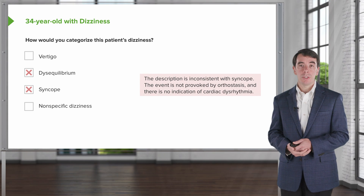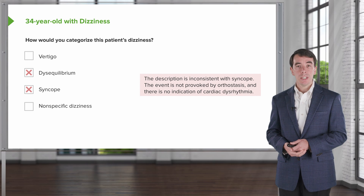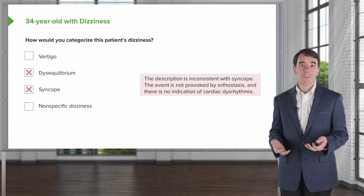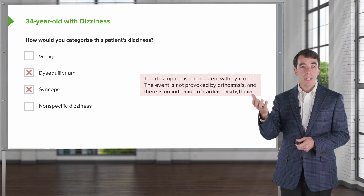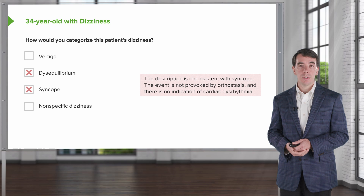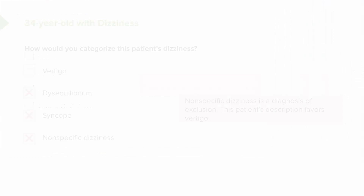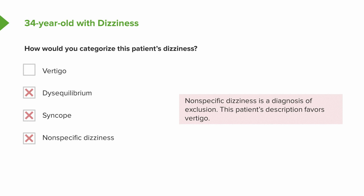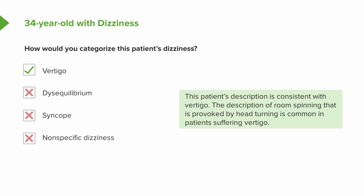The patient's description is also inconsistent with syncope. Syncope or presyncope is a feeling of fainting or near fainting, typically when patients stand up in the situation of orthostatic presyncope, and there's no indication of cardiac dysrhythmias, which would tip us off to a cardiac concern that would precipitate a syncopal event. Nonspecific dizziness is a diagnosis of exclusion, and this patient's presentation is really consistent with vertigo. The correct categorization is vertigo — the patient describes room spinning, provoked with head turning or sitting up in bed, which are common descriptions for patients suffering from vertigo.